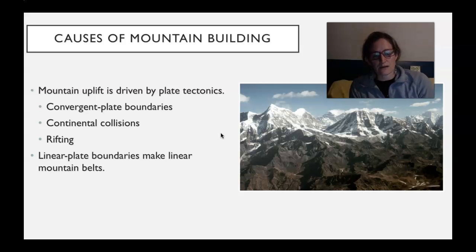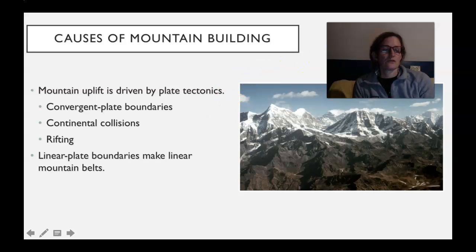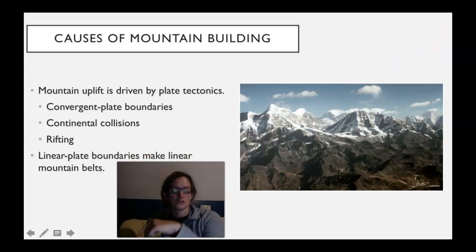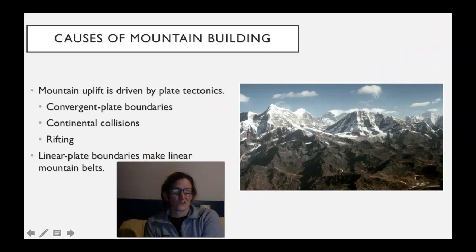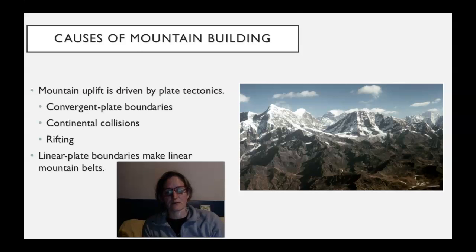There are also mountains that are going to form in rifting, when you have big normal faults. For the most part, what we saw earlier in the intro section to this chapter was that they're going to be in linear belts — a line of mountains across the landscape.